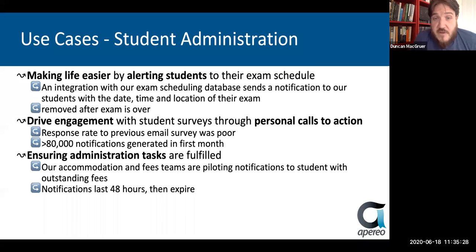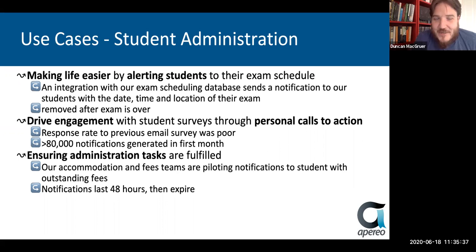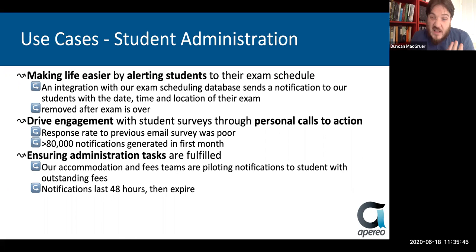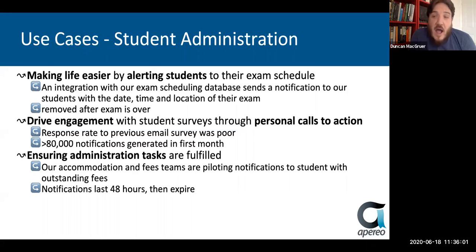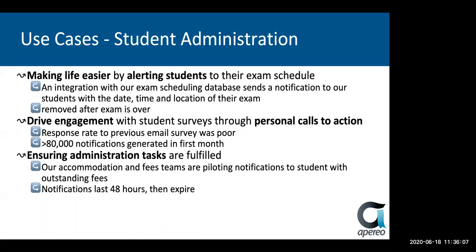Another thing we're doing is driving engagement with student surveys through personal calls to action. After every one of our credit-bearing courses, students have to complete a survey rating the course. Previously this was emailed out and we found the response rate was very poor — those emails would languish for a few weeks and students would ignore them. When we put this through the notification system it generated around 80,000 notifications in the first month across our student population, and response rates have been greatly increased.